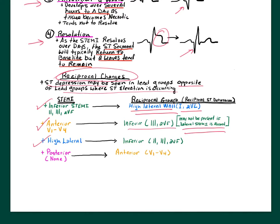If you have high lateral wall STEMI in leads 1 and AVL, the reciprocal changes will be in the inferior leads — that makes sense because they are reciprocal to each other. The posterior wall is tricky: there are no leads in a standard 12-lead that look directly at it. The anterior wall is reciprocal to the posterior wall, so if you get ST depression in the anterior leads V1–V3, you should always suspect a posterior wall MI.